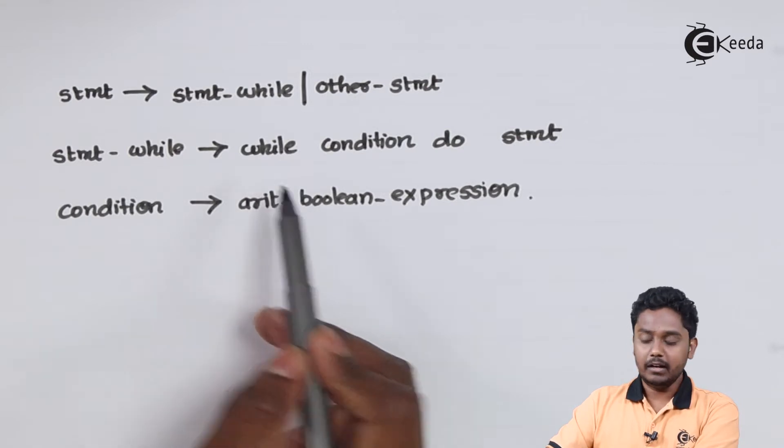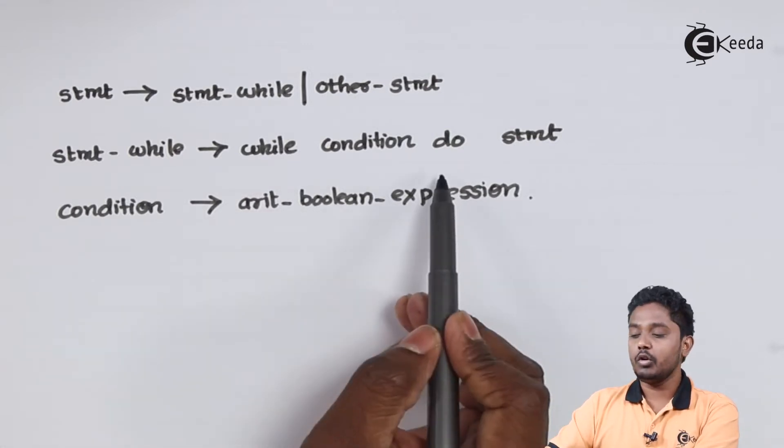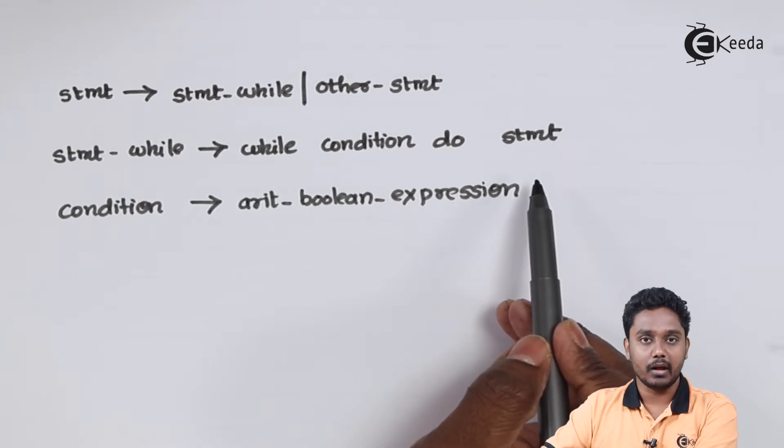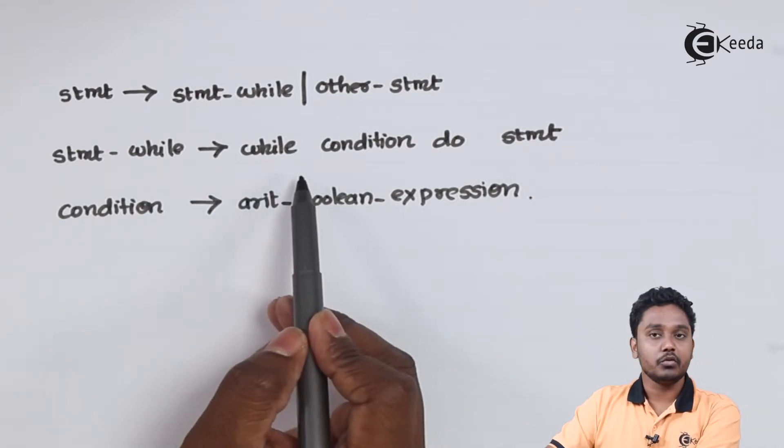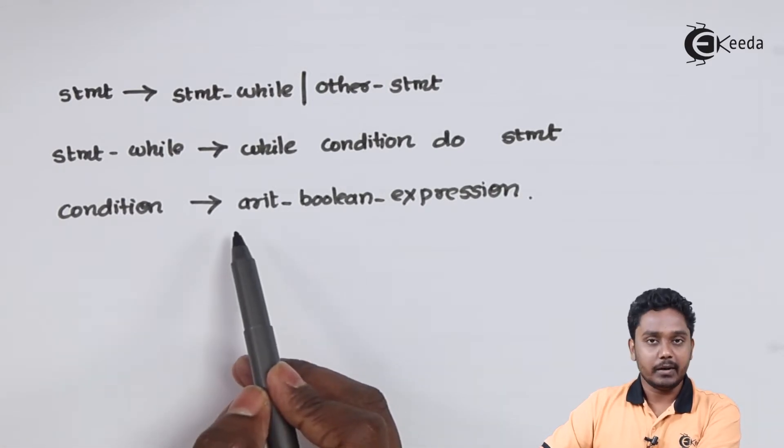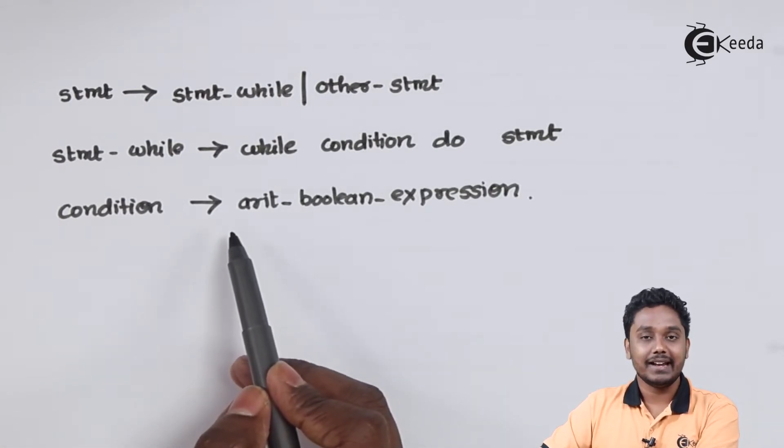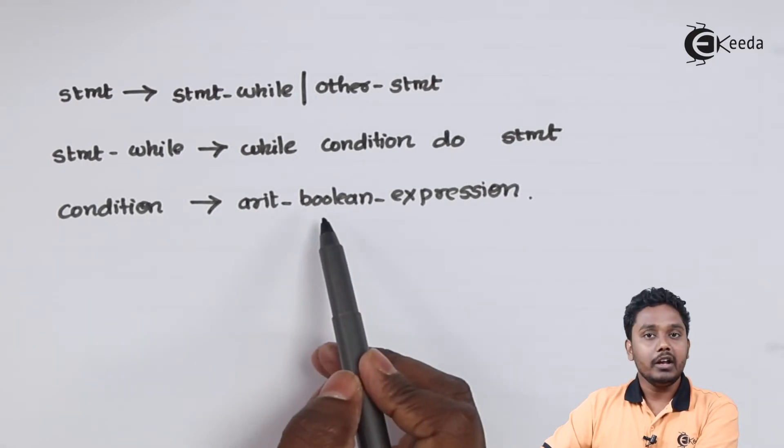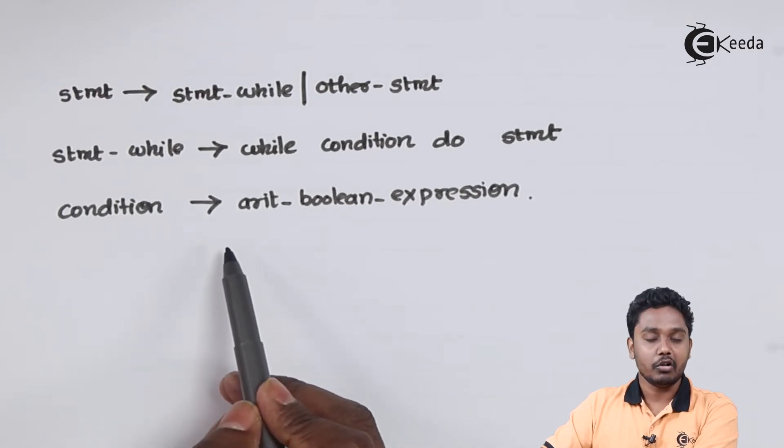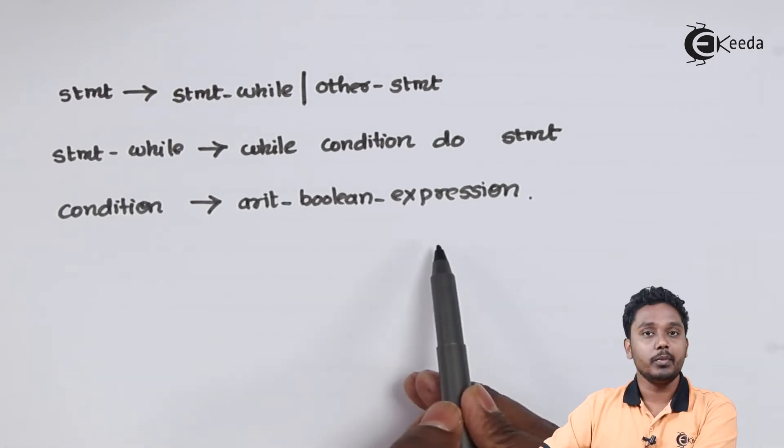it will be preceded by a while followed by a condition followed by do keyword and a statement which has to be executed a number of times depending upon the execution of condition. The condition could be either an arithmetic condition such as greater than, less than, equal to, not equal to, or it may be some Boolean expression which evaluates to either true or false depending upon the arithmetic or the Boolean expression the loop would be executed.